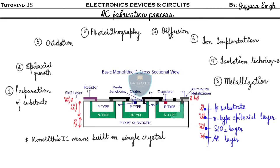These are the steps of the IC fabrication process: step one is preparation of substrate, step two is epitaxial growth, step three is oxidation, step four is photolithography, step five is diffusion, step six is ion implantation, step seven is the isolation technique, and step eight is metallization.